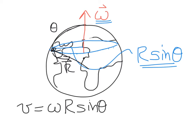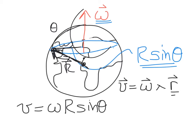This looks a lot like a cross product. It turns out that you can write the linear velocity vector that results from an angular rotation as the angular velocity vector crossed into the radius vector r, where r specifies the distance from the center of rotation — not just the distance from the rotation axis, but the full distance from the center.